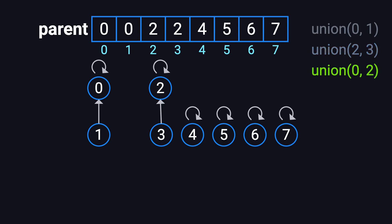Next, we perform Union(0, 2), meaning we merge the two small trees we just built. We choose 0 as the root and set parent[2] equals 0. Now, 0 becomes the representative of the entire group, and nodes 1, 2, and 3 all either directly or indirectly point to 0.